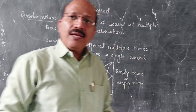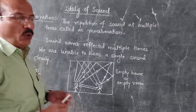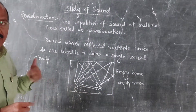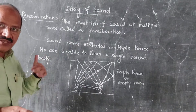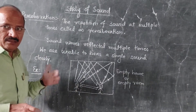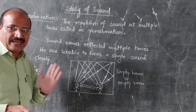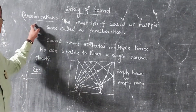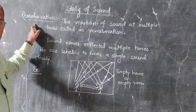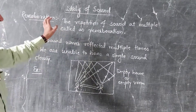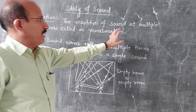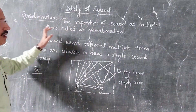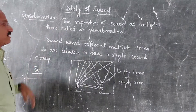But if echo is repeated multiple times and we can't hear the sound clearly, it is called as reverberation. That repetition of sound at multiple times is called as reverberation.